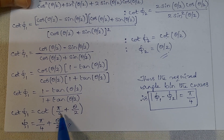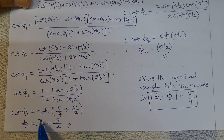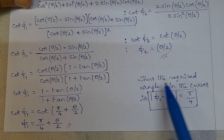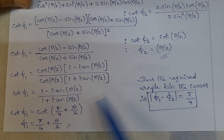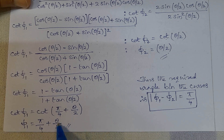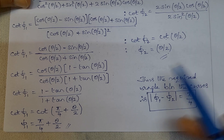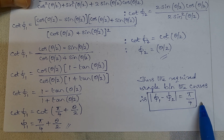This equals cot(45 degrees plus theta by 2), written in radians as cot(pi by 4 plus theta by 2). So phi 1 equals pi by 4 plus theta by 2. The required angle between the curves is the modulus of phi 1 minus phi 2: (pi by 4 plus theta by 2) minus theta by 2. The theta by 2 terms cancel, leaving pi by 4, which is 45 degrees. So the angle between the curves is 45 degrees.